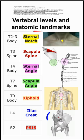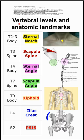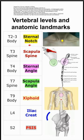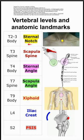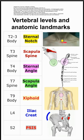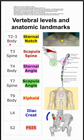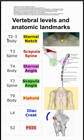These are anatomic landmarks and their corresponding vertebral levels. At the top of the list is the sternal notch, which is this region here. It corresponds to the body of T2 and T3.